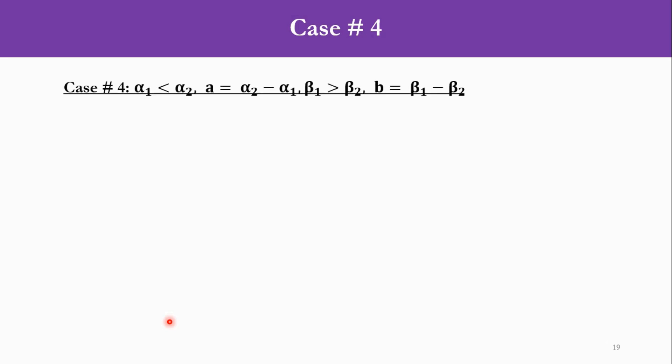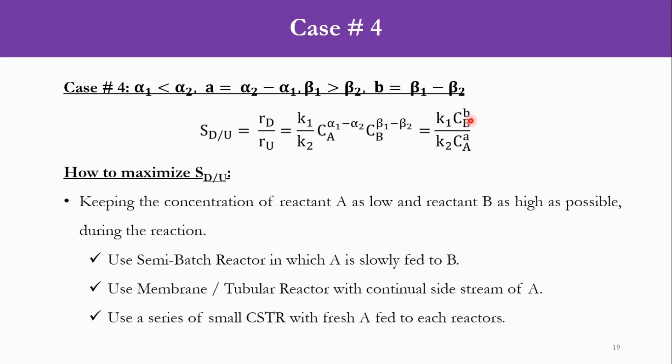Case 4: α1 < α2 (A = α2 - α1) and β1 > β2 (B = β1 - β2). The selectivity becomes K1/K2 * Cb^B / Ca^A, which is the opposite of Case 2. Here we minimize the concentration of A while keeping the concentration of B as high as possible. The same reactor types as Case 2 are used but with reversed roles: in the semi-batch reactor we slowly feed A to the system; in a membrane or tubular reactor, A is the side stream; and in CSTR series, B is fed to the first reactor while A is fed to the downstream reactors.